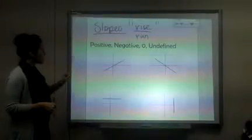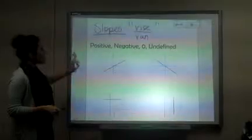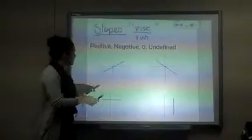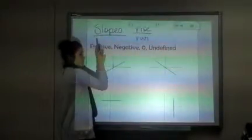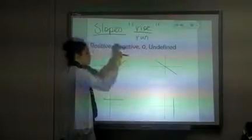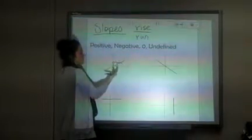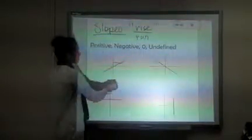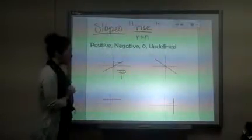Let's look at this first one. You probably know that slopes are rise over run. So if I were to rise positive and run positive, my answer is going to be positive. You can also just see that the slope is positive, so this one would be a positive slope.